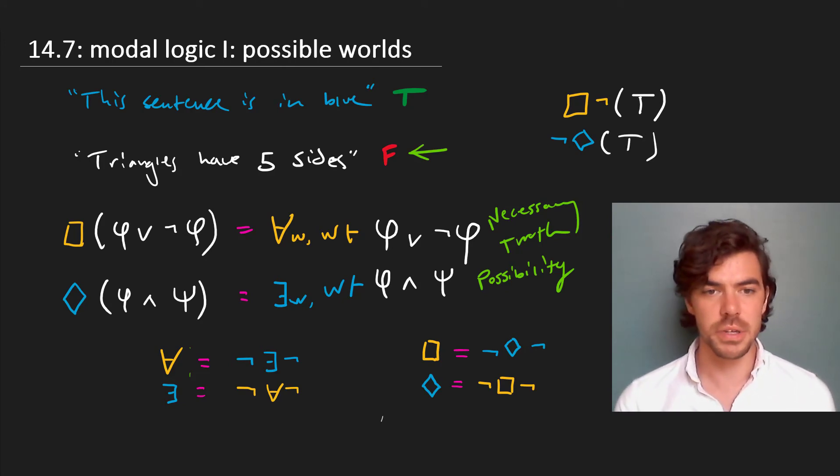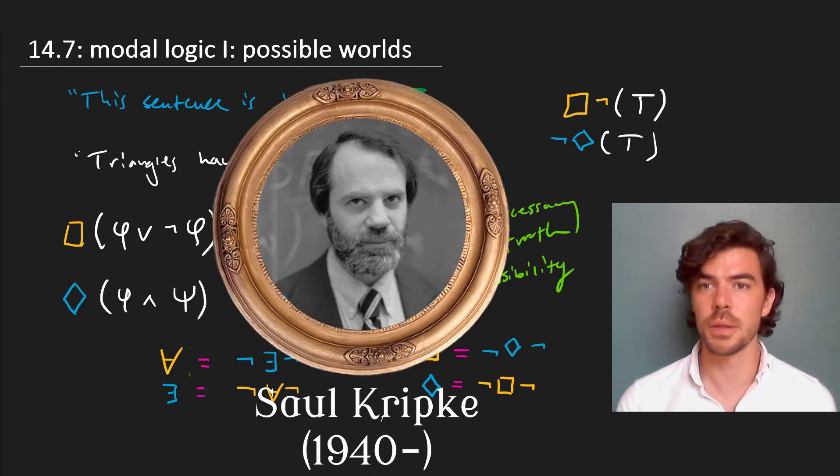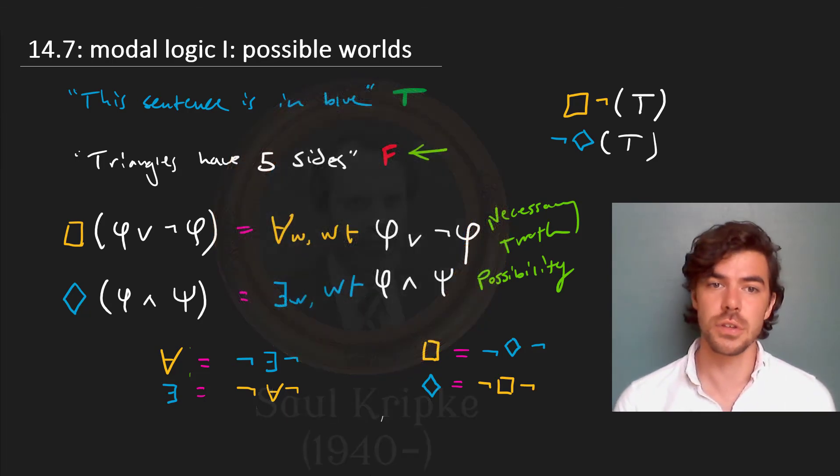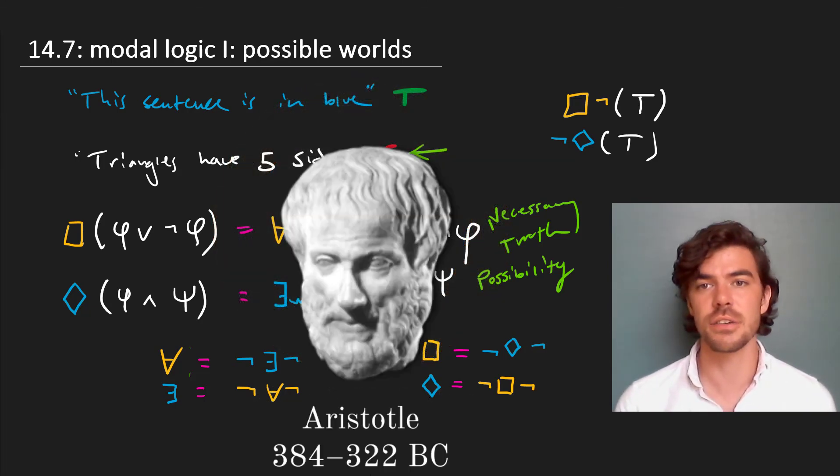Treating necessity and possibility in quantificational terms like this was a huge leap for modern logic. We owe a lot of this to the pioneering work done by Saul Kripke on the modal operators. That said, modal logic is basically as old as logic itself, in the sense that Aristotle wrote on it.